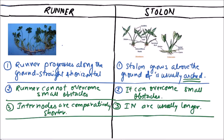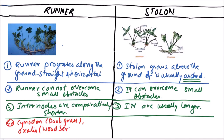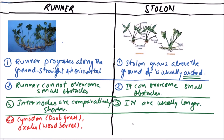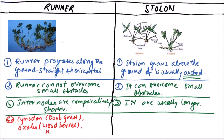The examples of runners are Cynodon, that is Bermuda grass, Oxalis, that is wood sorrel, and Hydrocotyle.